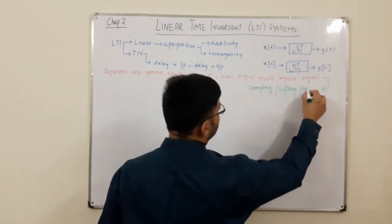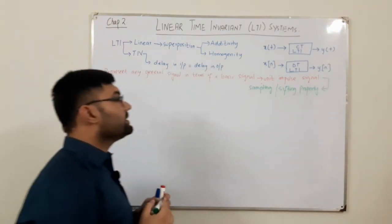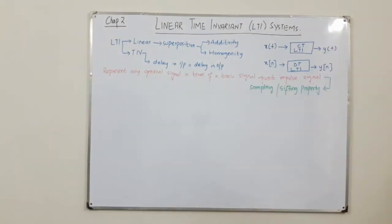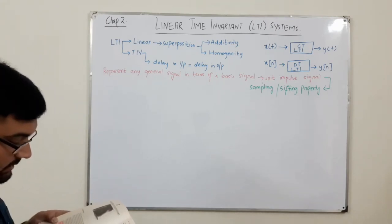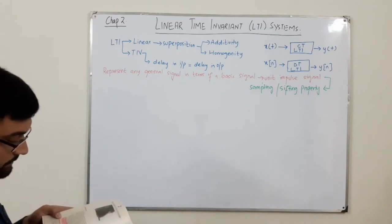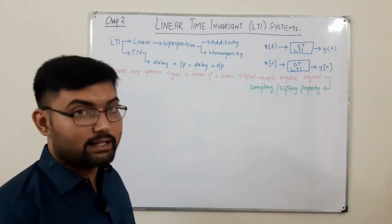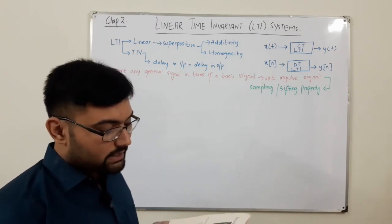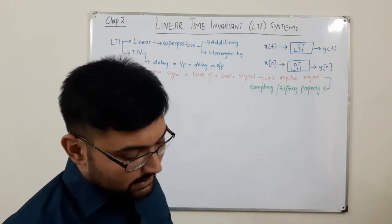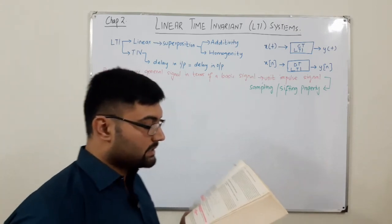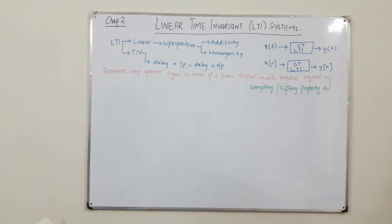Using this property, we represent our signal in terms of impulse signals. As the book states, the major use of LTI systems is that they possess superposition. If we can represent the input as a linear combination of basic signals, we can use superposition to compute the output in terms of the responses to those basic signals. The basic signal here is the unit impulse.